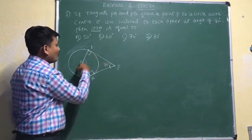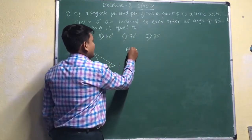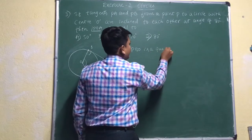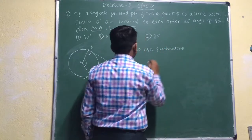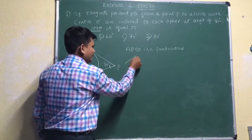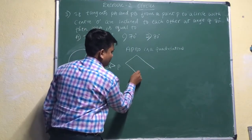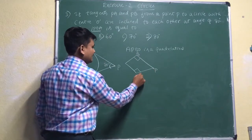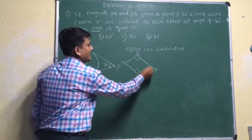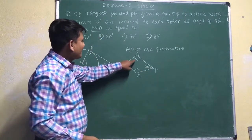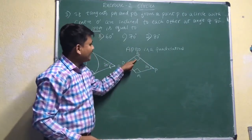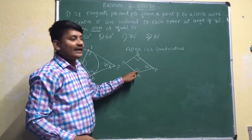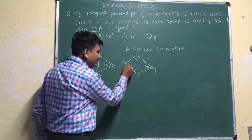I will take APBO as a quadrilateral. In this diagram, the angle at A is 90 degrees and the angle at B is 90 degrees. Here B, P, A, and O are the four vertices, and the angle at P is given as 80 degrees. OA is a radius and AP is a tangent — they are always perpendicular to each other at the point of contact.